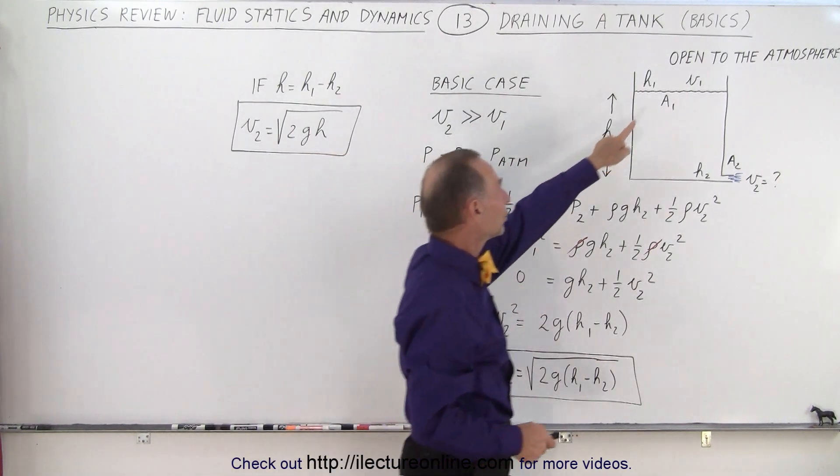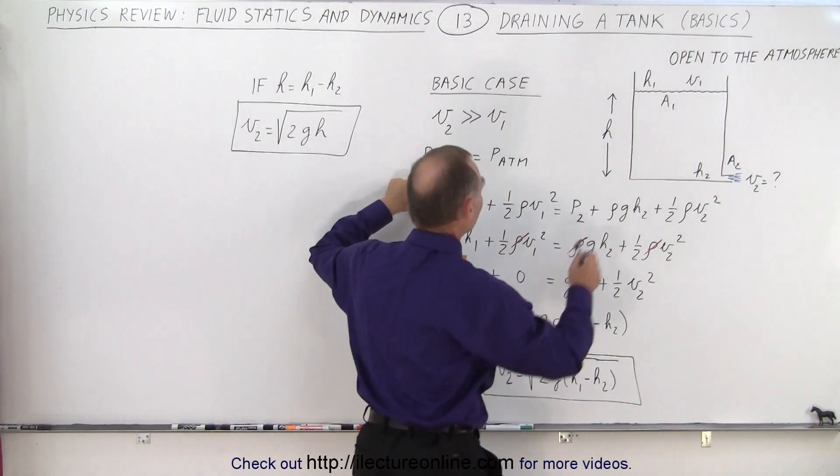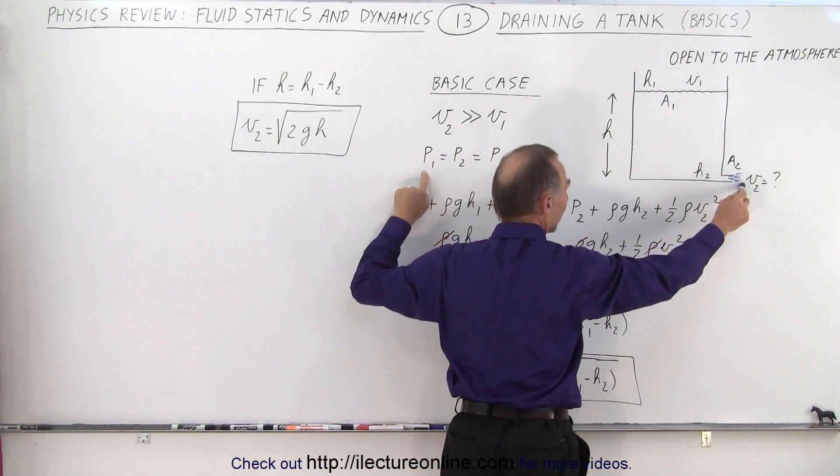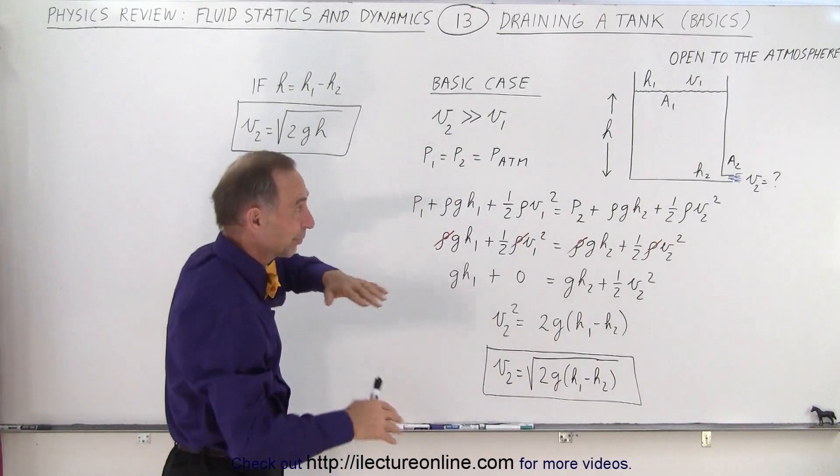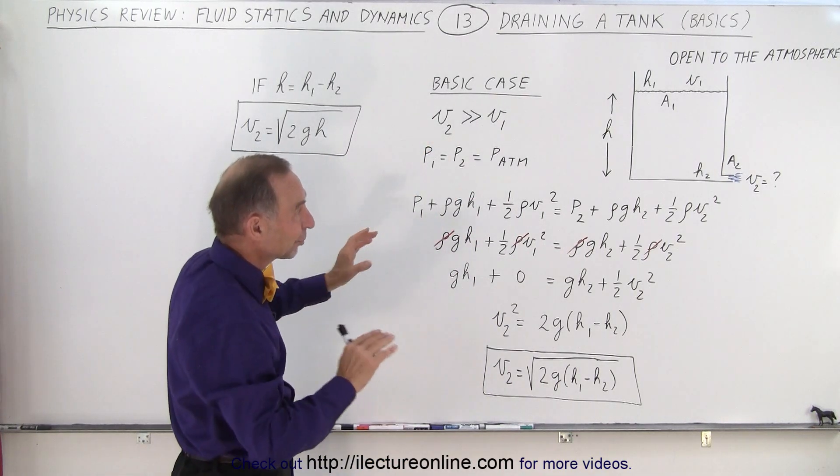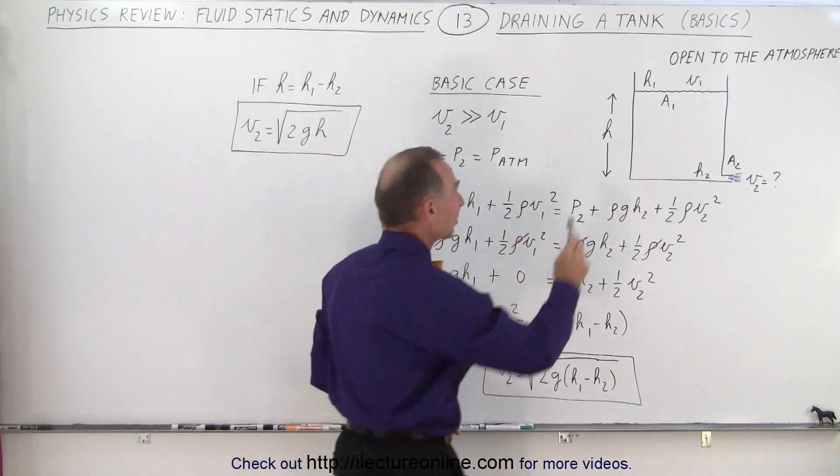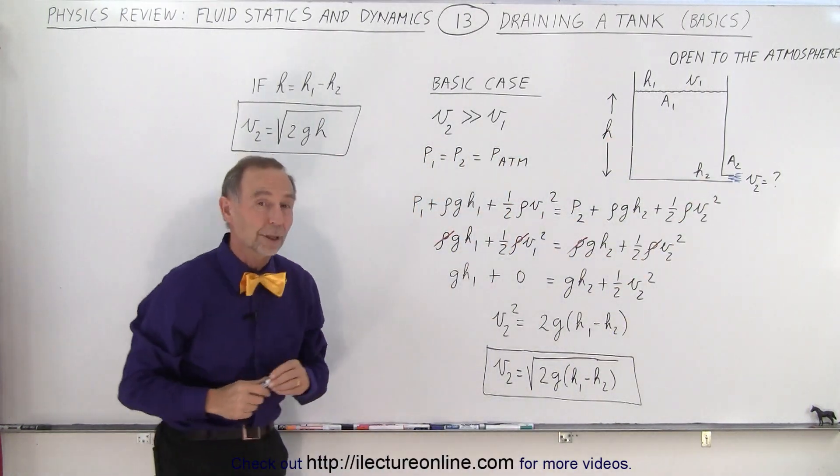Also we say that the tank is open to the atmosphere, which means that the pressure at the top must equal the pressure at the bottom, unless the tank is of course several hundred meters tall, but for a typical tank that's not the case. So the air pressure is essentially the same at the top and bottom, so we can simply cancel that out as well.